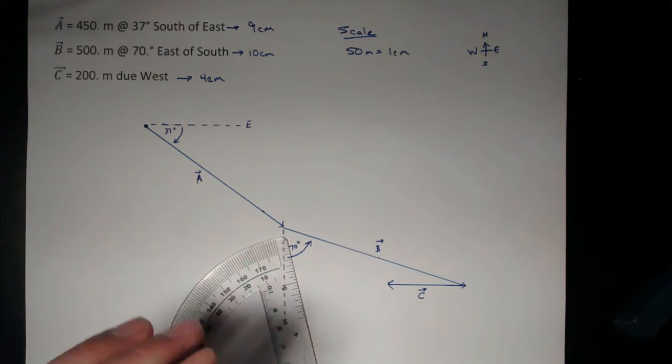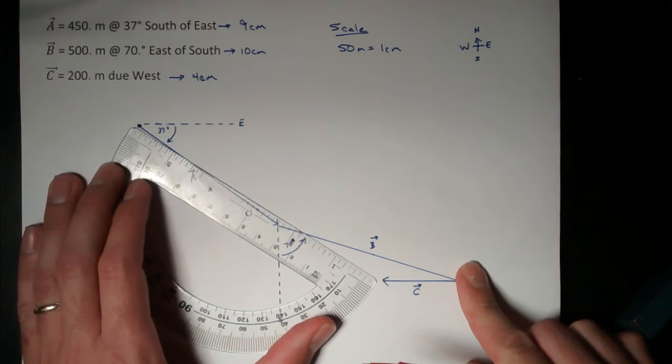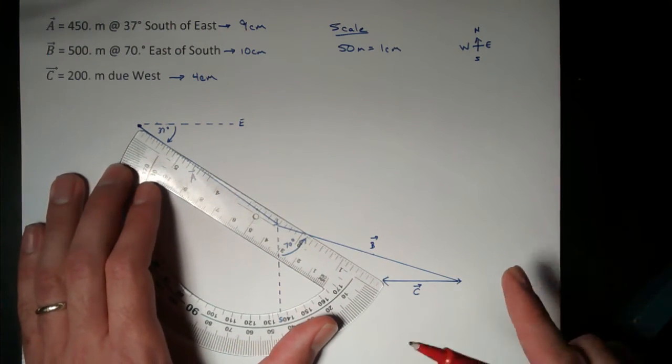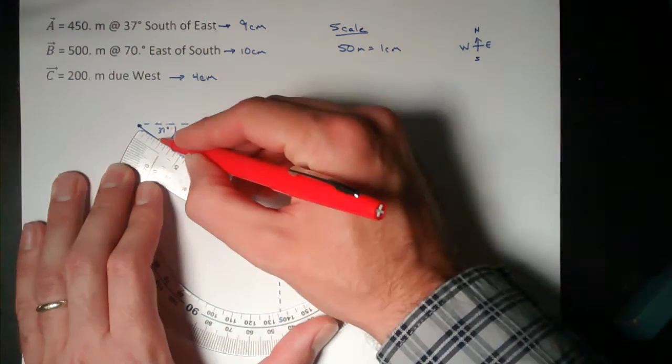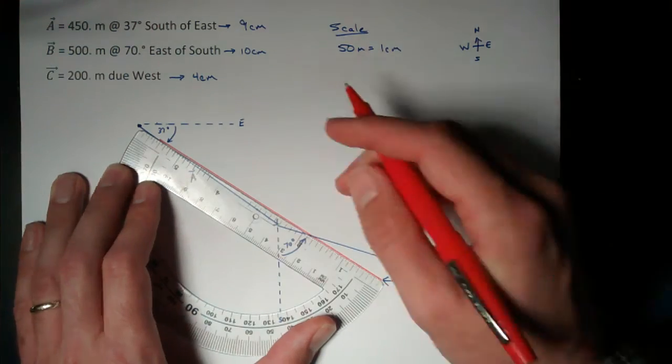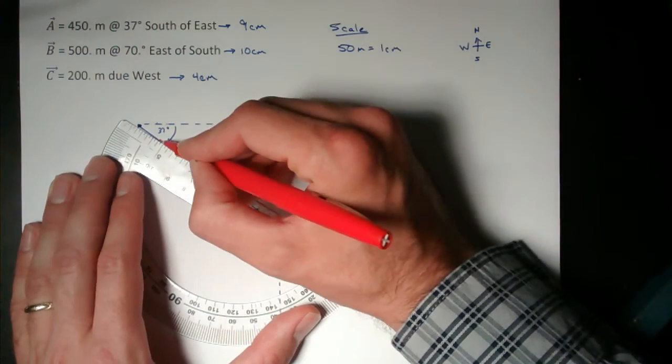Okay, now the resultant goes from the starting point to the ending point, just a little further than my protractor can reach. So I'll have to do it by going most of the way, and then moving my protractor and connecting it back to the starting point.